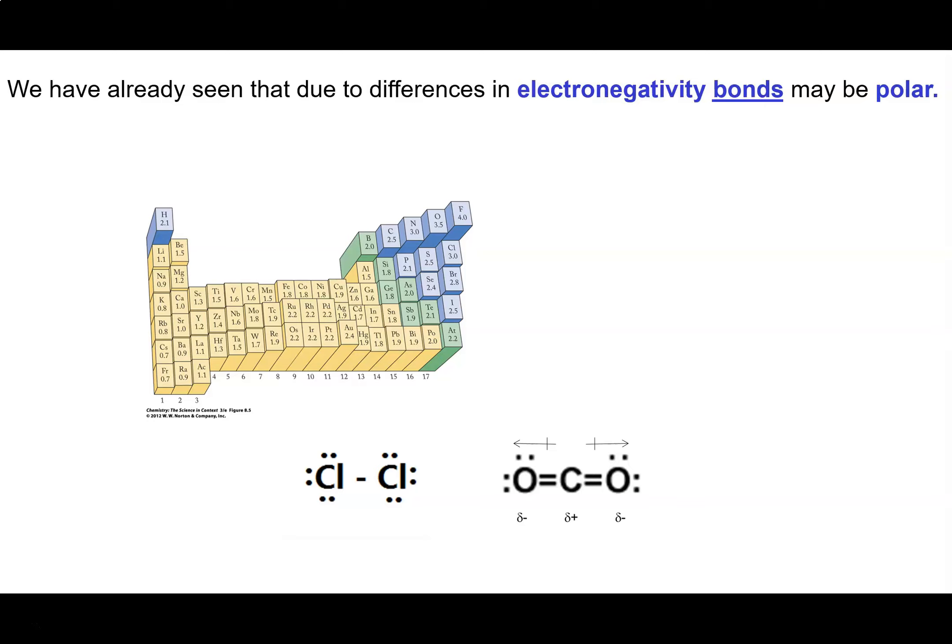So we've already seen that due to differences in electronegativity of different atoms, that an individual bond might be polar. If I have two identical atoms that have the same electronegativity, there won't be a positive end or negative end of this bond. However, if I have two different atoms,